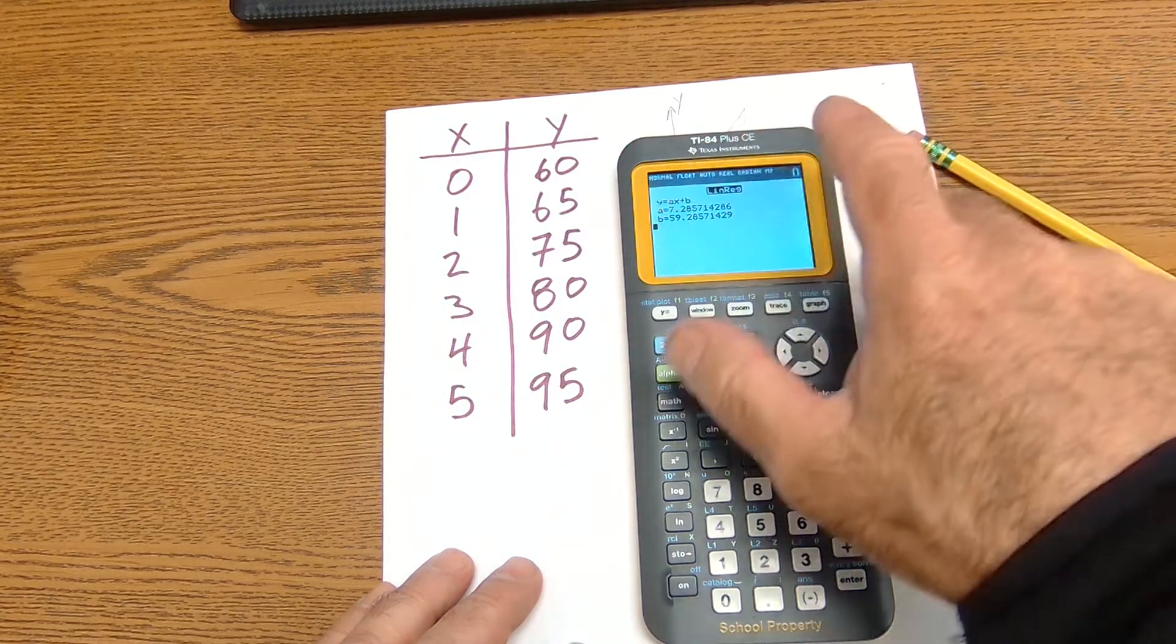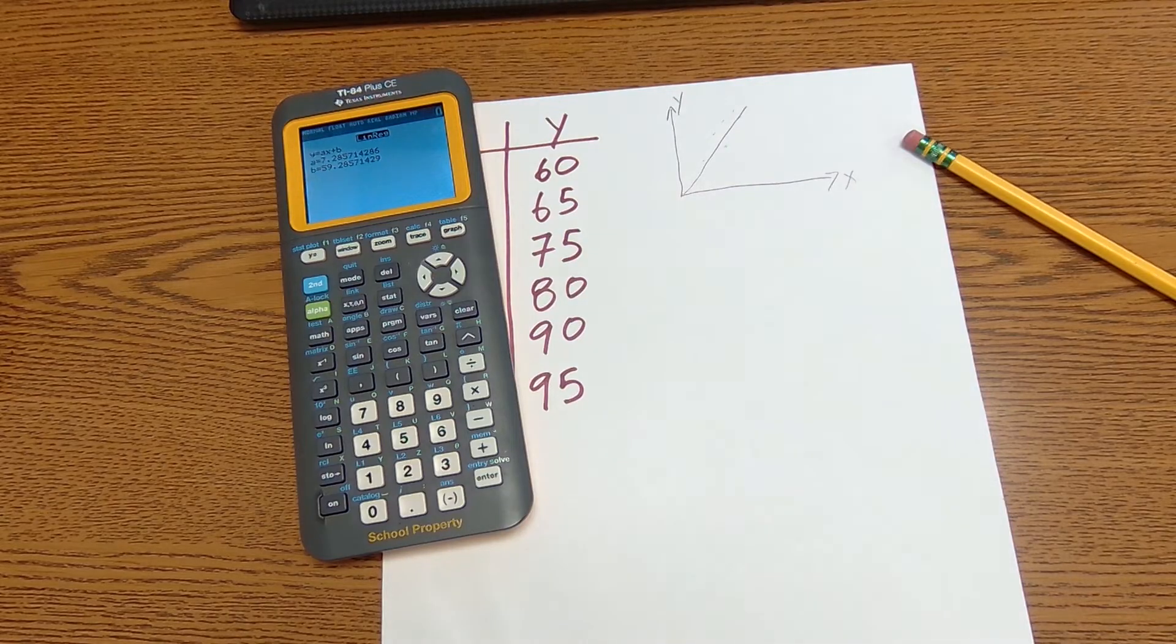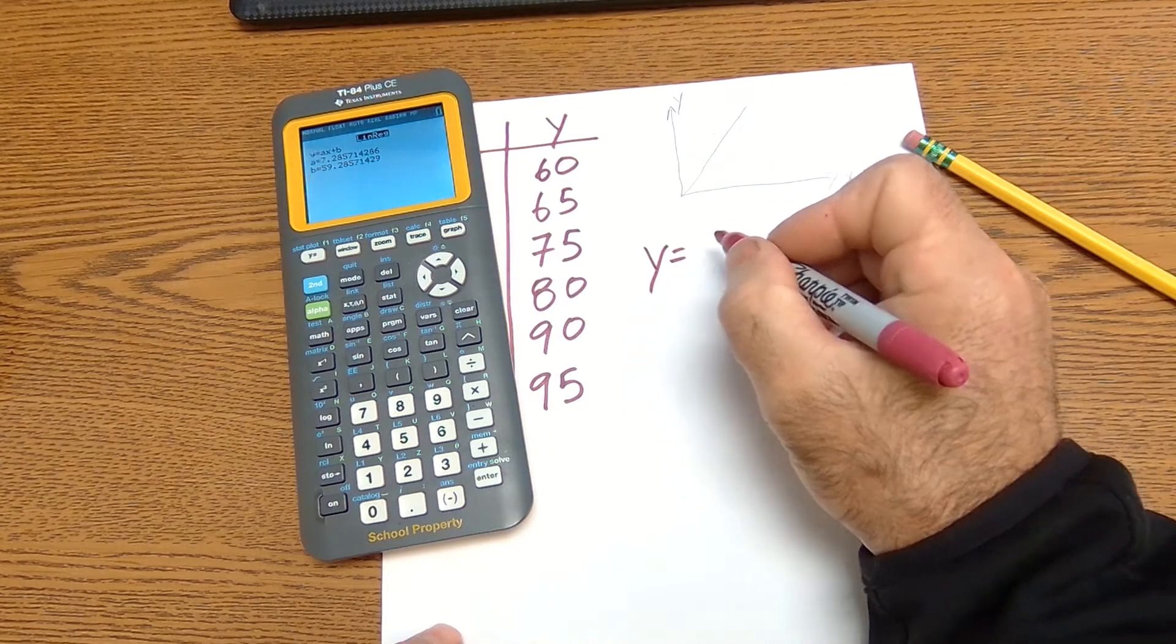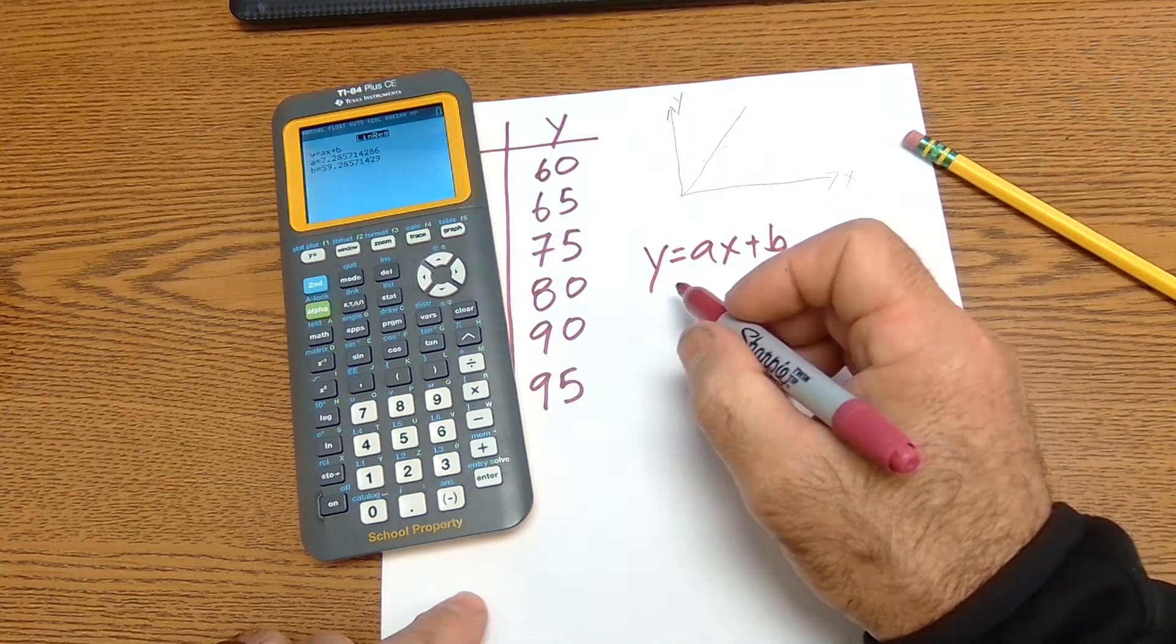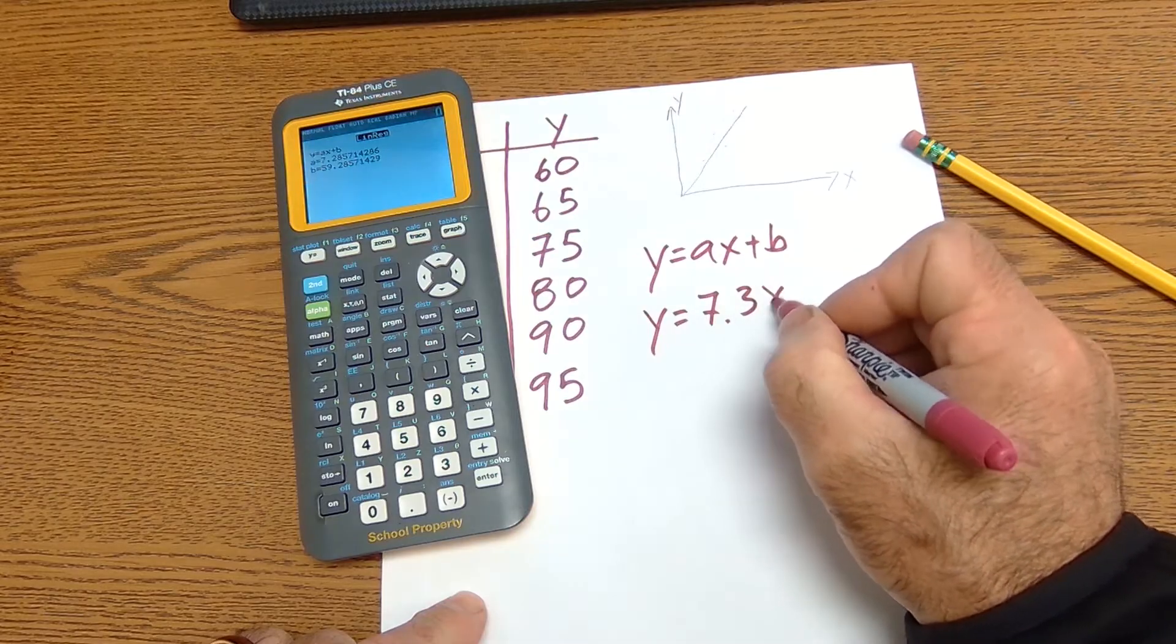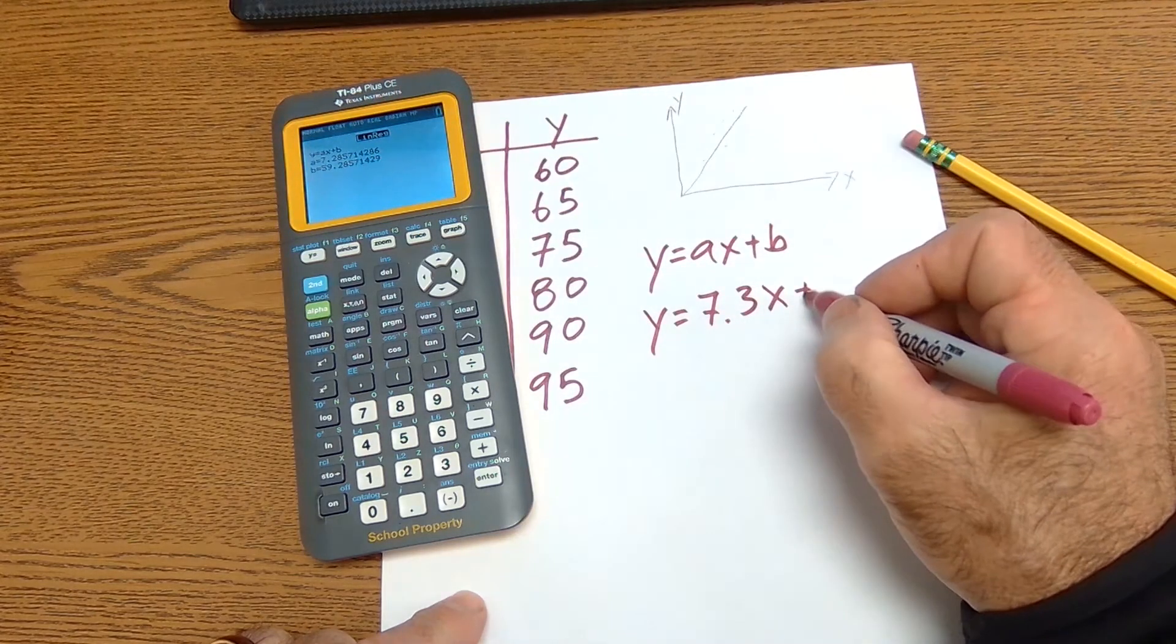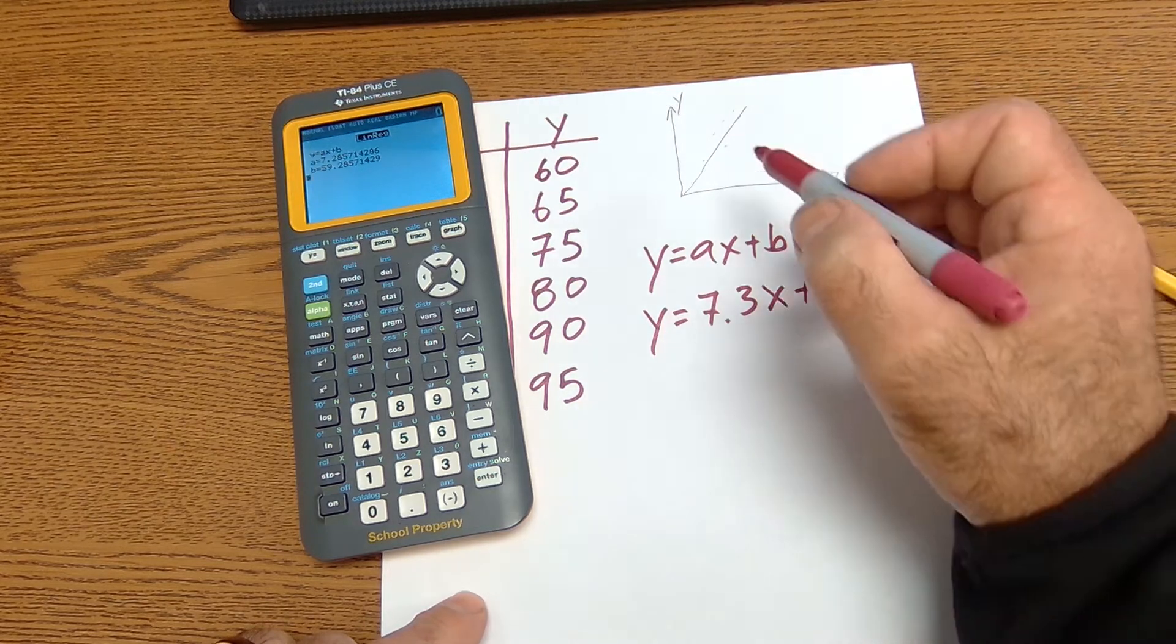So there's my general equation, y equals ax plus b. So then it gives me my specific equation. This is just like y equals mx plus b. So then I have y equals 7.3x plus b, which is 59.3. And that's my model, my line of best fit.